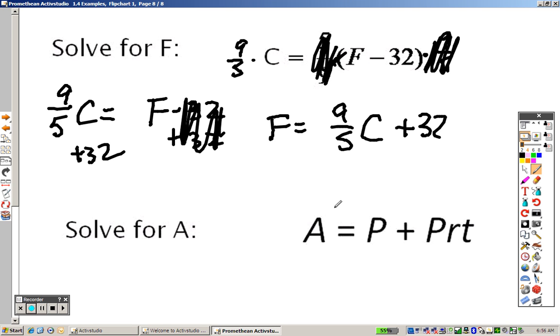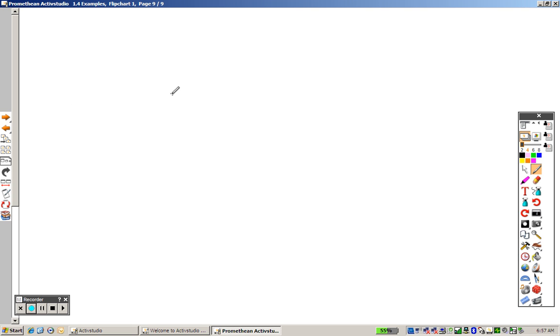And this one, solve for A. I guess this is a trick question. A is already by itself, so it's done. So I guess it's just to fool you, but it's already done. A is already alone, so since A is already alone, that's it. If you have any further questions or concerns, please feel free to let me know.